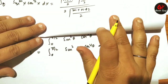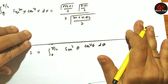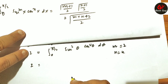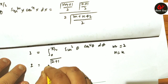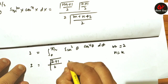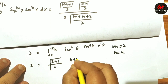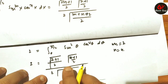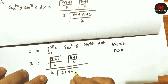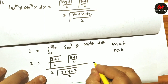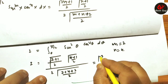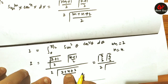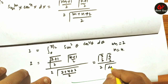Applying the formula with m = 2 and n = 4: the numerator is Γ((2+1)/2) · Γ((4+1)/2) = Γ(3/2) · Γ(5/2), and the denominator is 2 · Γ((2+4+2)/2) = 2 · Γ(4). So we have Γ(3/2) · Γ(5/2) divided by 2 · Γ(4).